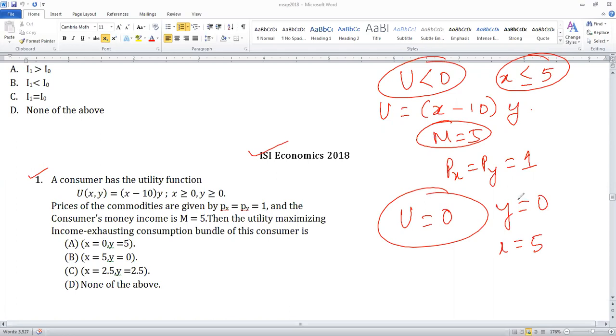So ideally what should happen? If I don't have to exhaust my money income, 0, 0 income exhausting consumption bundle. That's why they have mentioned this income exhausting consumption bundle.